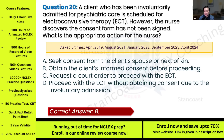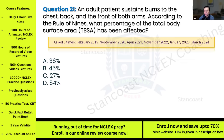Question twenty-one: An adult patient sustains burns to the chest, back, and the front of both arms. According to the rule of nines, what percentage of the total body surface area (TBSA) has been affected? This has been asked six times. Options: A) 36%; B) 45%; C) 27%; D) 54%.